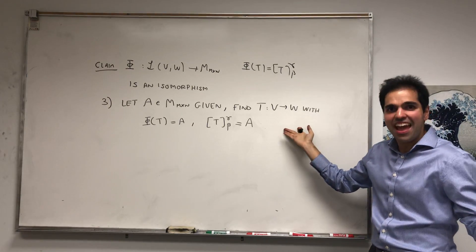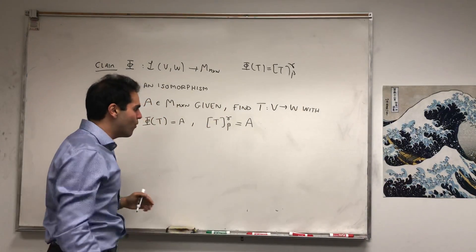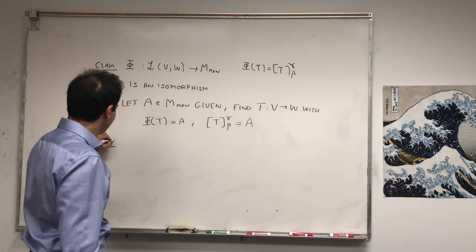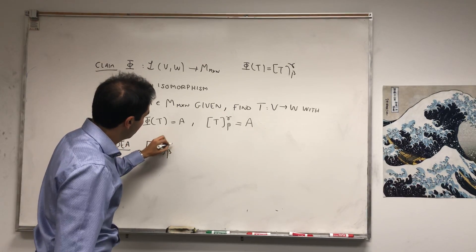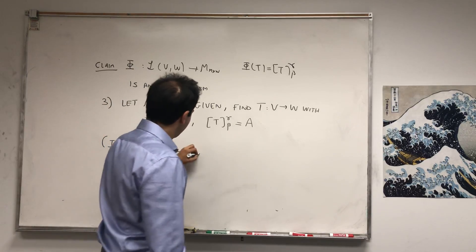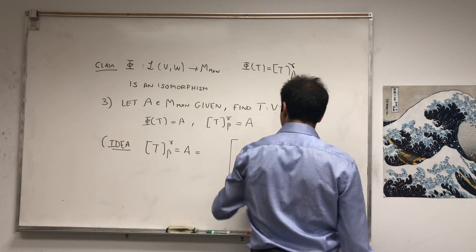That is, [T]_beta^gamma equals A, and the idea is simply let T be the transformation whose matrix is A. So suppose we find a matrix of T, we want to find A. So here's the idea: we would like the matrix of T to be A, which is again this huge thing with entries a_ij.